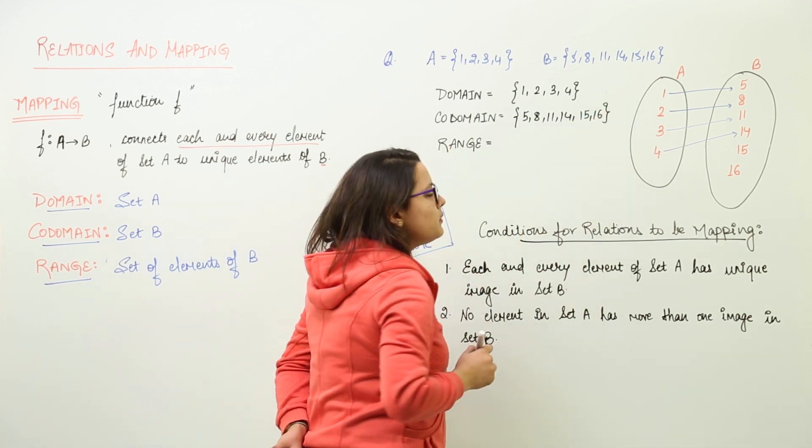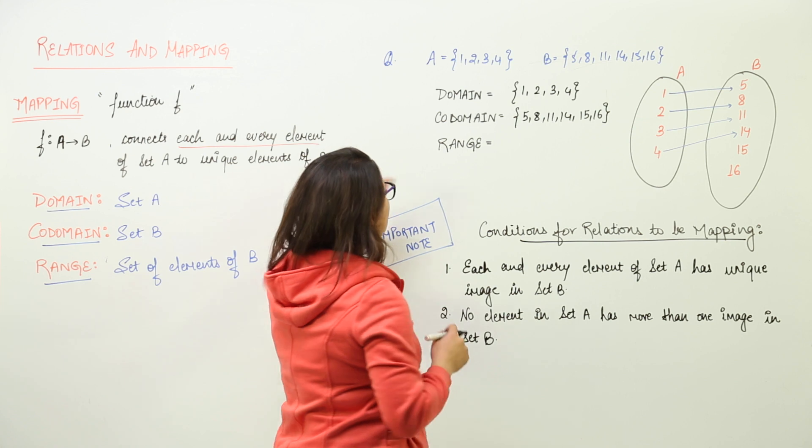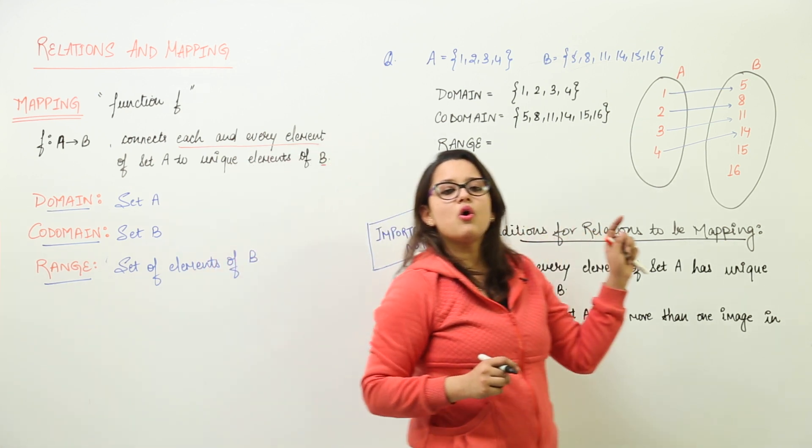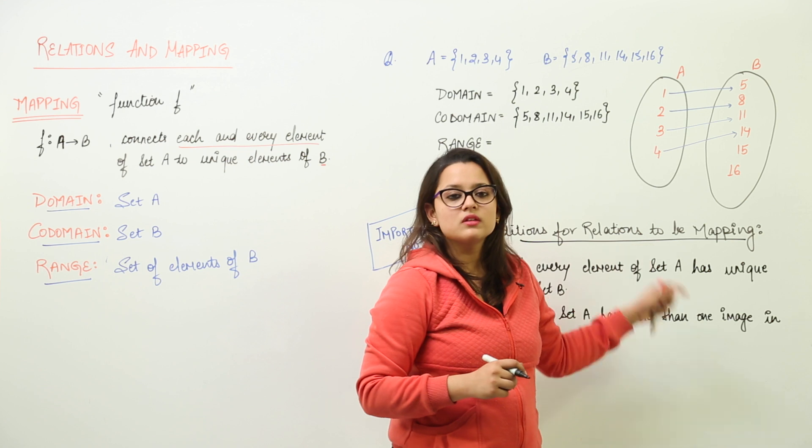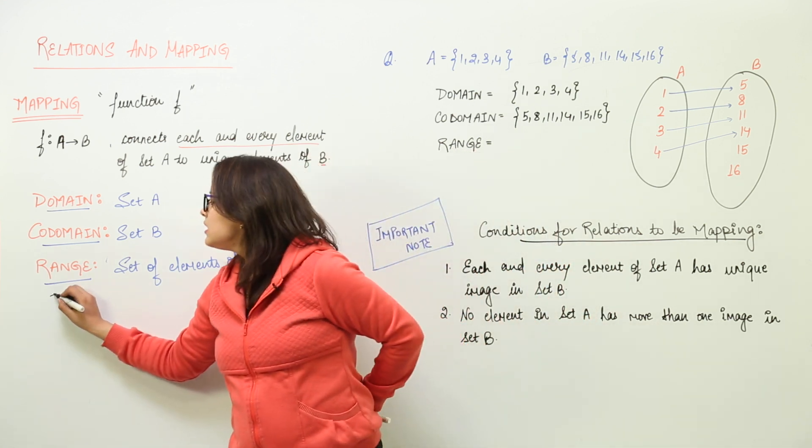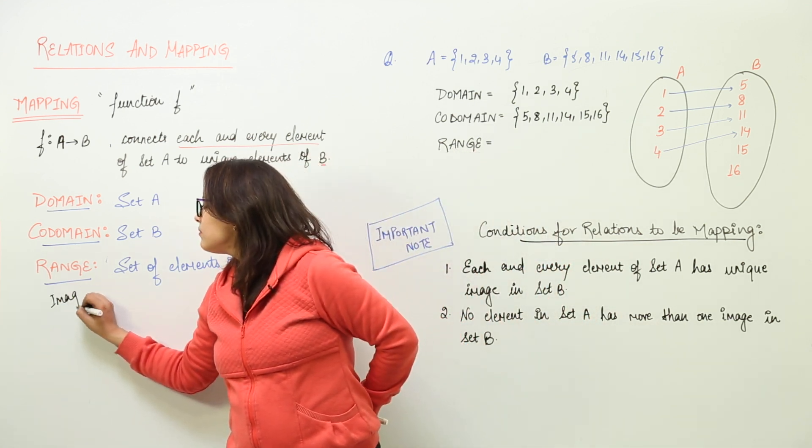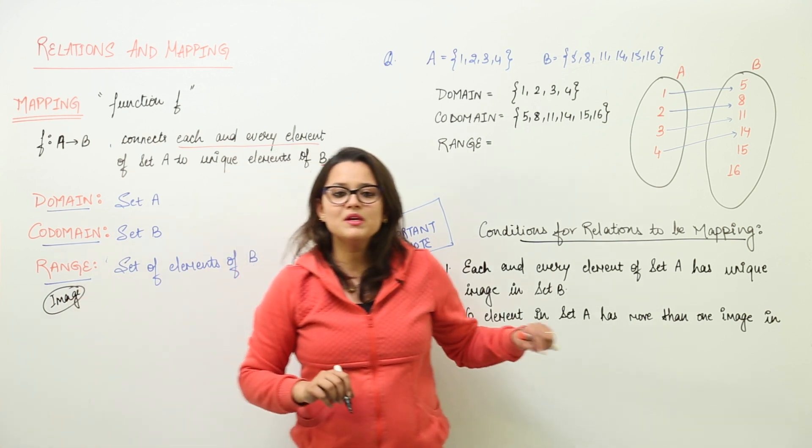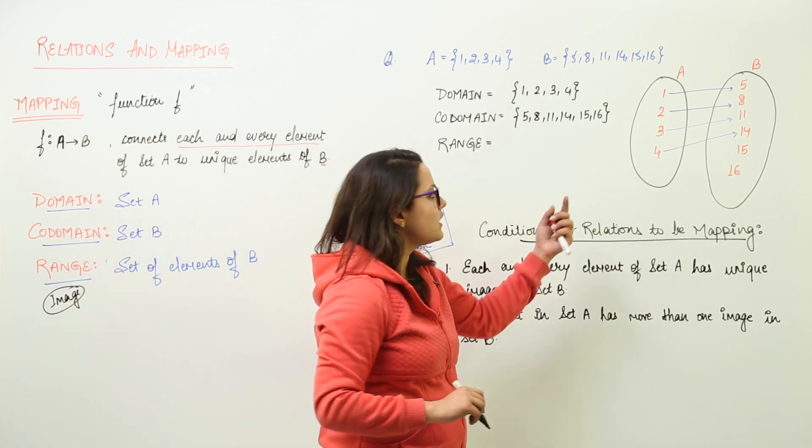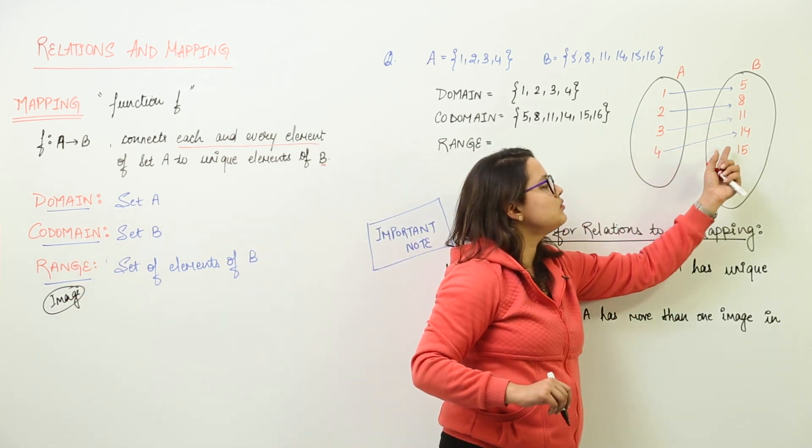That's for the co-domain. What about the range? How is range different from co-domain? Range is all the image. Range is as the other name I will write over here. It is known by the other name called image. Image of all the elements of set A are the range.